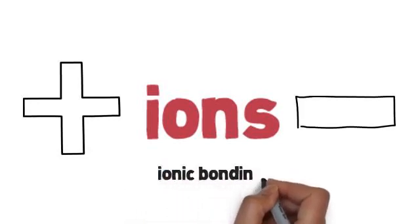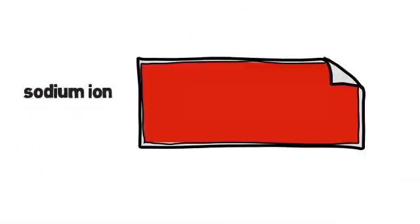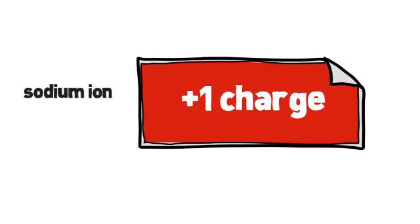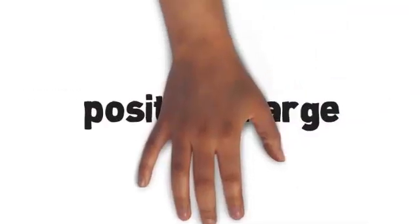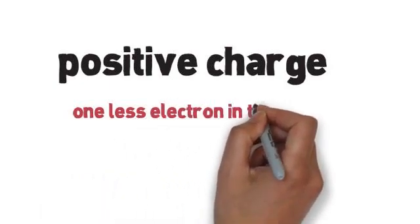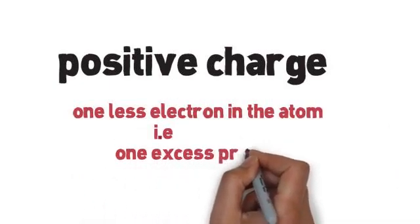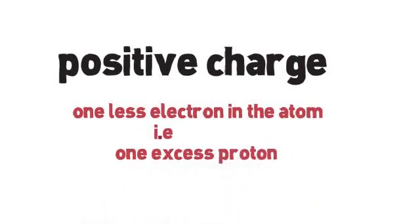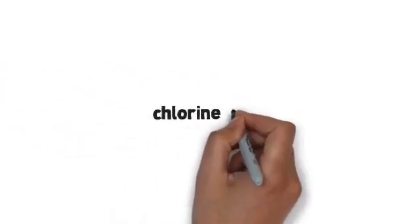So the sodium loses an electron and it makes a sodium ion and it has a plus 1 charge, a positive charge. This is because it's lost one electron which is negative. So overall there is one less electron in the atom, or in other words, one excess proton, thus making it positively charged.